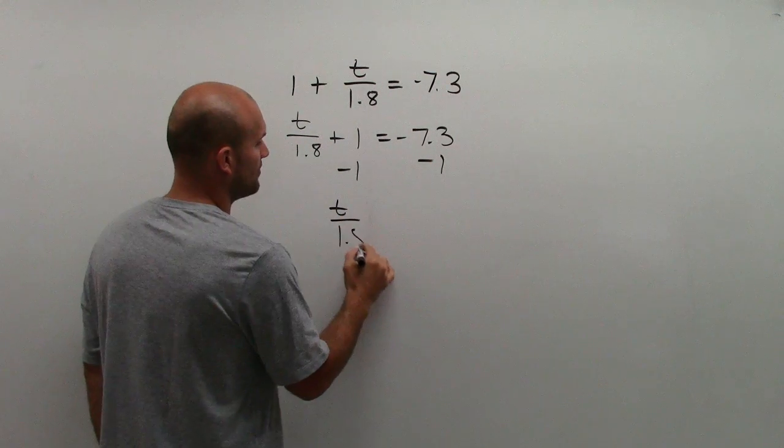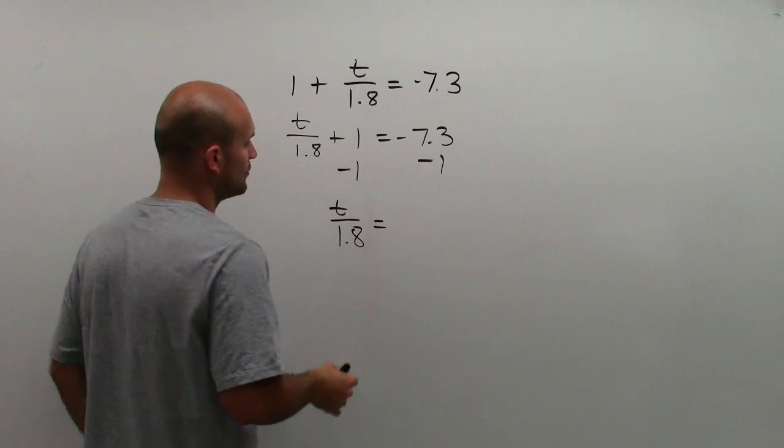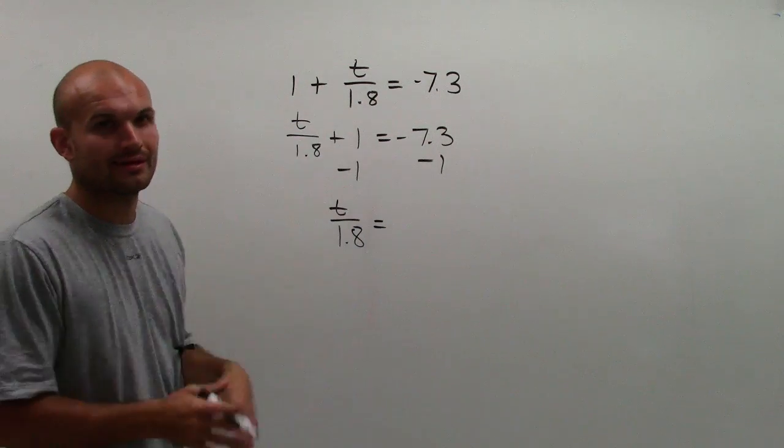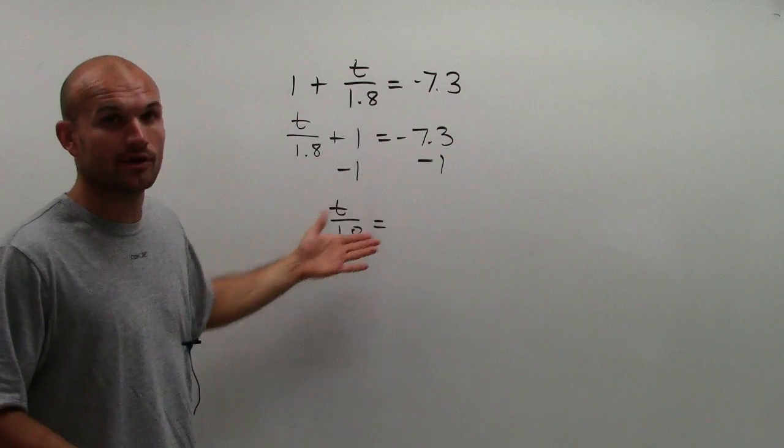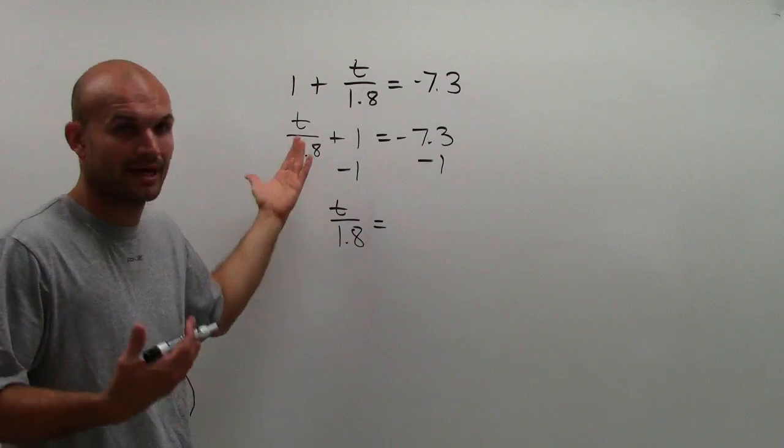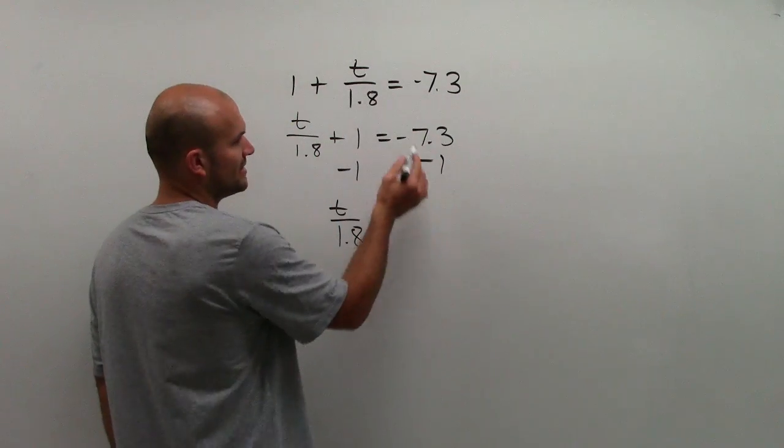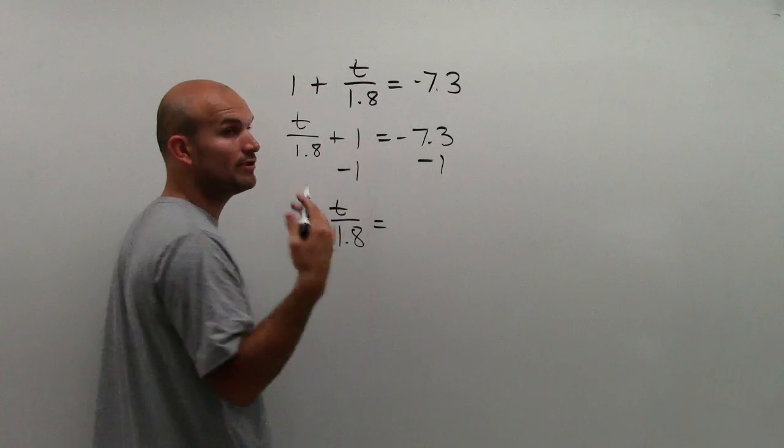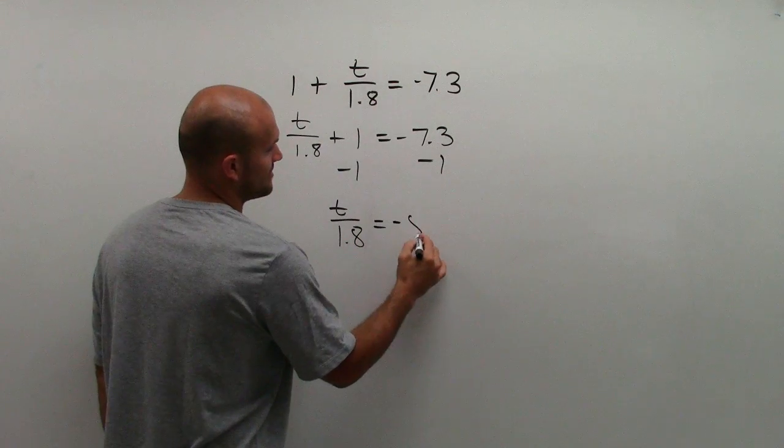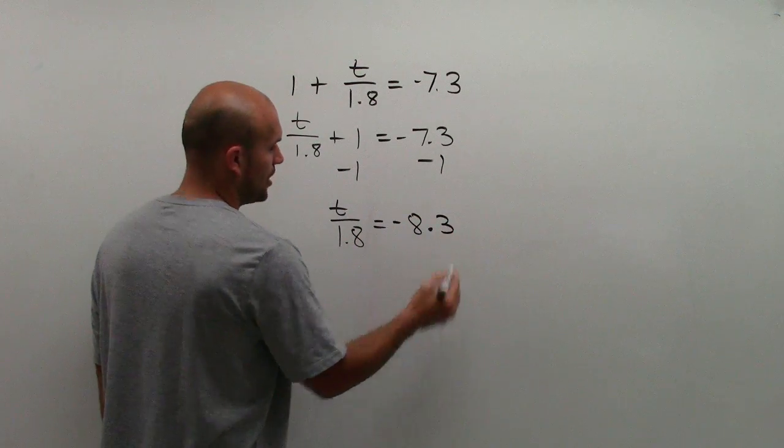Then I have t over 1.8 equals - because positive 1, negative 1, they say cancel out, but we don't want to say cancel out. They go to 0, and 0 plus t over 1.8 is t over 1.8. And then negative 7.3 minus 1 is going to give me negative 8.3.